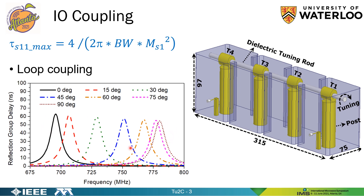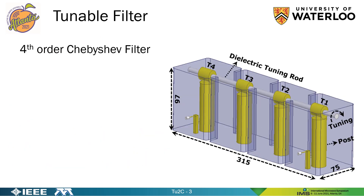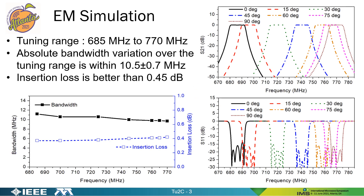We can employ a shaped probe to further enhance performance. We designed a fourth order tunable filter for proof of concept. Tuning is achieved by rotating the dielectric rod, which in turn rotates the elliptic tuning elements. These are the simulated results as the tuning rod is rotated. The tuning range is from 685 MHz to 770 MHz, over which the absolute bandwidth variation is within 10.5 ± 0.7 MHz. Peak insertion loss is better than 0.45 dB over the entire tuning range.